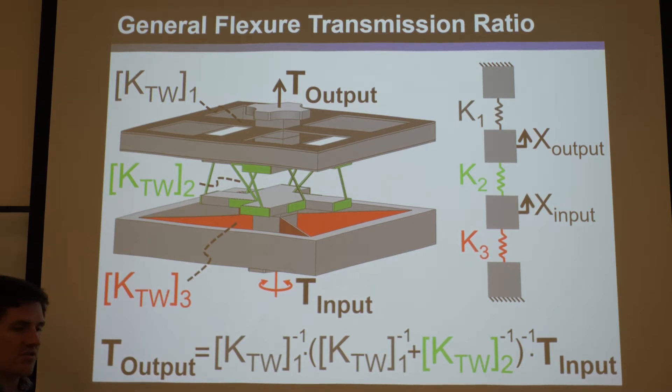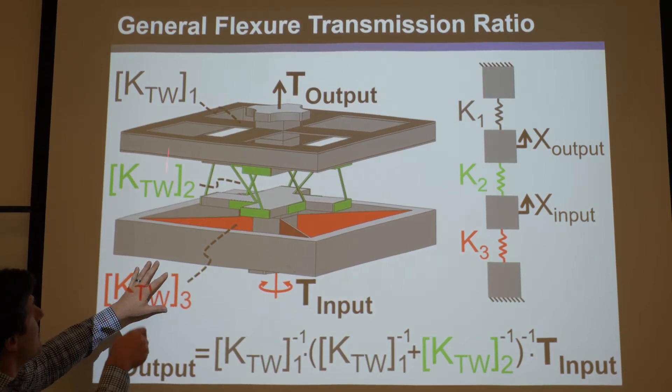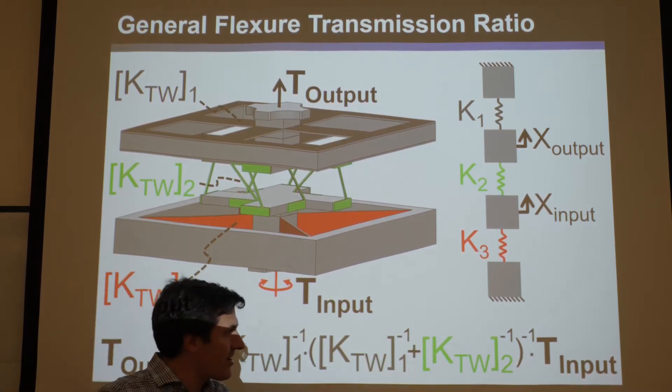In reality, flexors can stretch and compress along their axis, and they have finite compliance in the other direction. When you actually add material properties and geometry, which is captured by these stiffness matrices, plug in here...